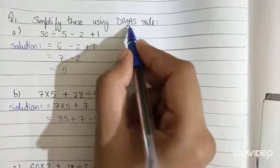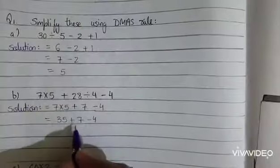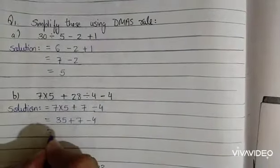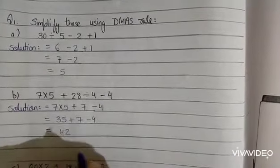Now according to DMAS rule, then we add. Here addition symbol is given, so we add. 35 plus 7, 42.